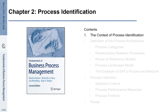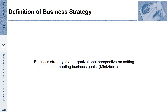Chapter 2, Section 1 – The context of process identification. Process identification is very closely related to business strategy. Mintzberg provides the definition of business strategy as follows: business strategy is an organizational perspective on setting and meeting business goals. These business goals define the overall direction of a business process management initiative in a company, and process identification helps to operationalize this business strategy.